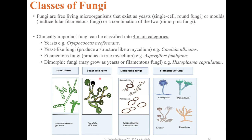The clinically important fungi can be classified into four main categories: yeasts such as Cryptococcus neoformans; yeast-like fungi that produce a structure called mycelium such as Candida albicans; filamentous fungi that produce a true mycelium such as Aspergillus fumigatus; and dimorphic fungi which may grow as yeast or filamentous fungi such as Histoplasma capsulatum.